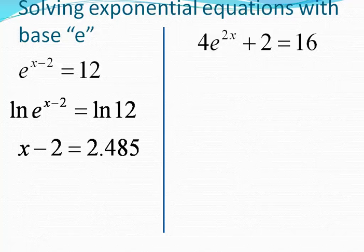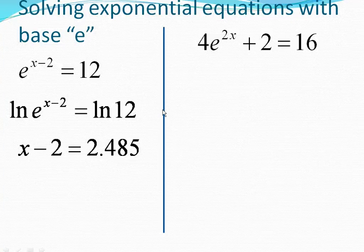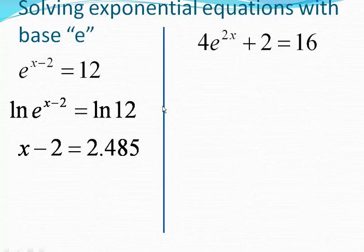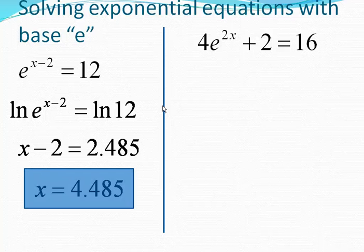So we do that to both sides, and we end up with x minus 2 on the left, and then the ln, which is right next to the 4 button on your calculator. Do ln 12, gives you 2.485. Solve for x by adding 2, and you get 4.485.